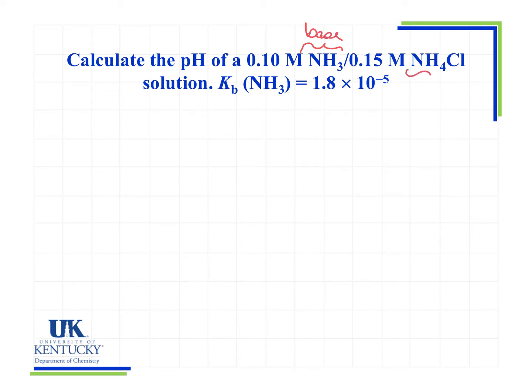So if you were to add a proton, it ends up being NH4+, that's the cation of this salt. This would be its conjugate acid. So we have a solution that contains a weak base and its conjugate acid, so we have what we call a buffer.